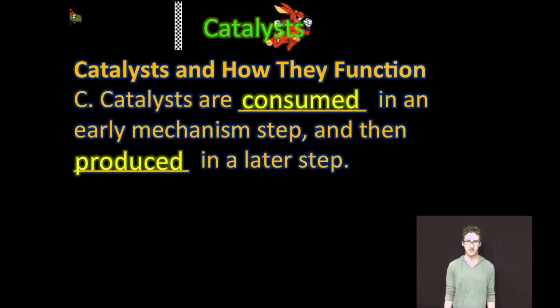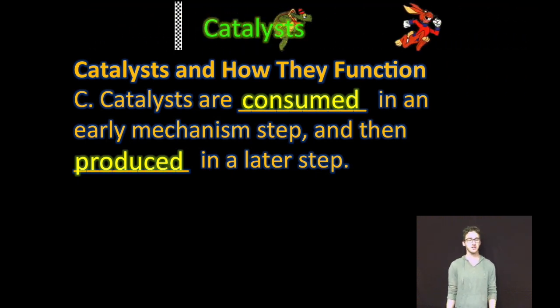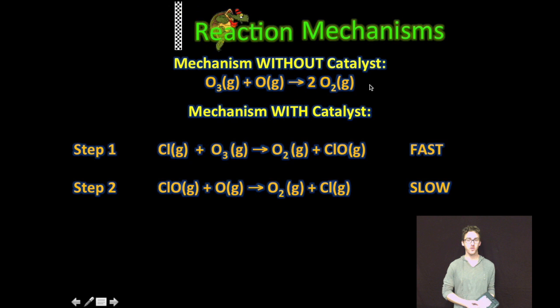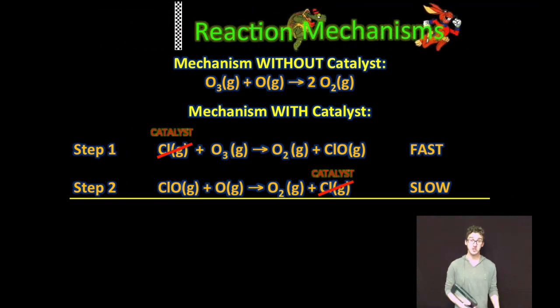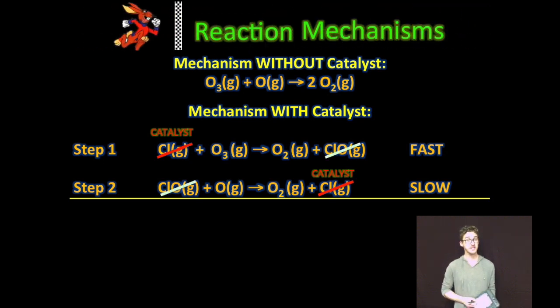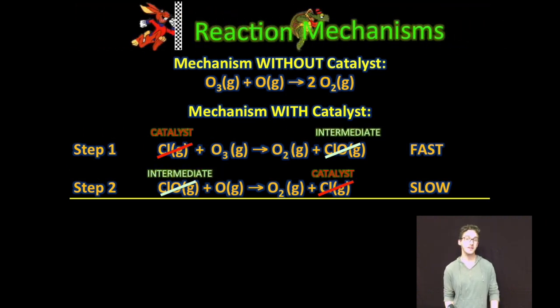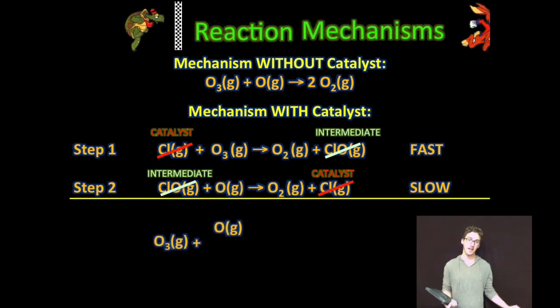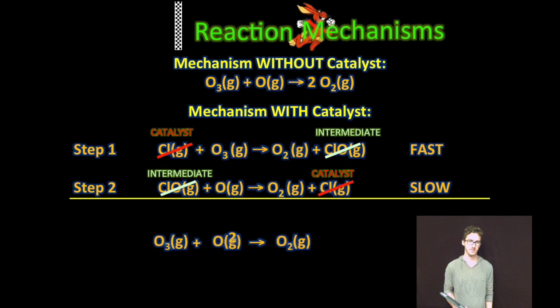Now, how can we identify a catalyst? Well, in a reaction mechanism, they are consumed in an early step and produced in a later step. As you look at the sample reaction for the decomposition of ozone into oxygen gas, you are provided with the overall reaction and then a proposed mechanism. Recognize that the chlorine in this proposed mechanism is a catalyst, because it's consumed in an early step and produced in a later step, which differs from our intermediate definition in which it is produced in an early step and consumed in a later step. Recognize that in the overall reaction, when we sum the two elementary steps together, neither the catalyst nor the intermediate end up in the overall reaction. Boom! Catalysts.